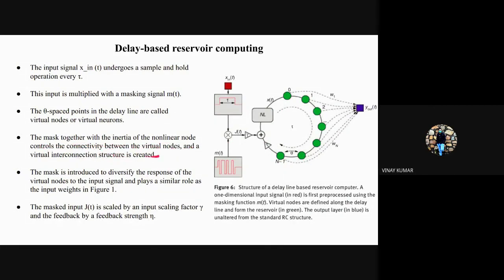In time, the virtual nodes are created. The mask together with the inertia of nonlinear node controls the connectivity between virtual nodes and the virtual interconnection. It's similar to our spatially distributed, but the masking is happening and that's controlling the connectivity between the nodes—the virtual nodes and the W_int matrix will be controlled by the mask.